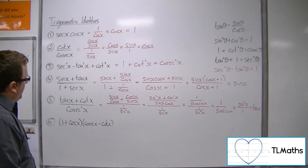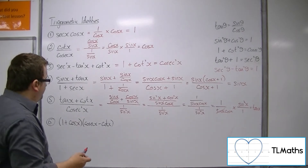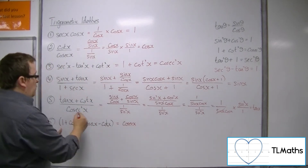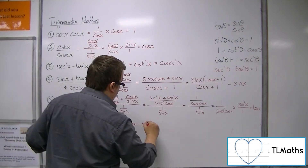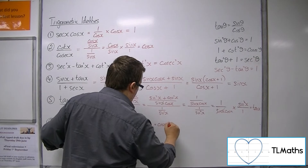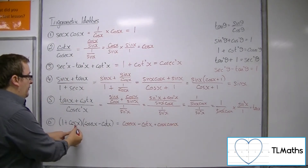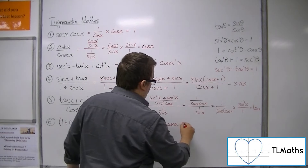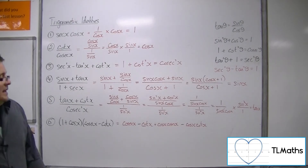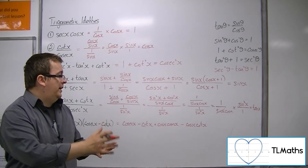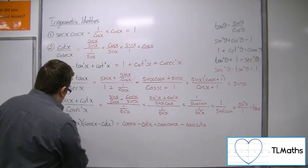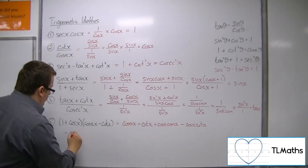For number 6, we're going to multiply out the brackets. We've got 1 lot of cosec, then minus cot, then cos x times cosec, and cos x times minus cot, giving minus cos cot. We want to rewrite cosec and cot in terms of sine and cosine. Cosec x is 1 over sine.